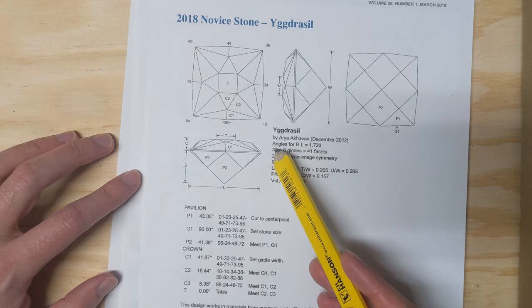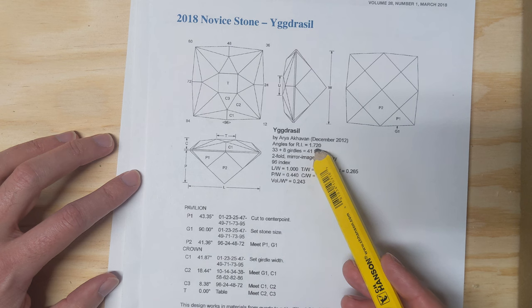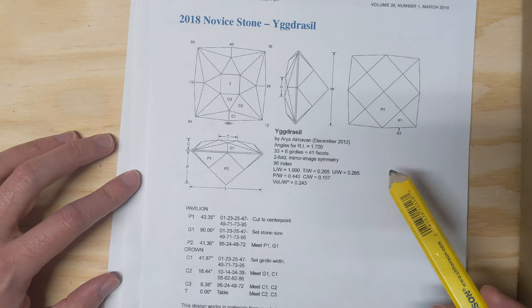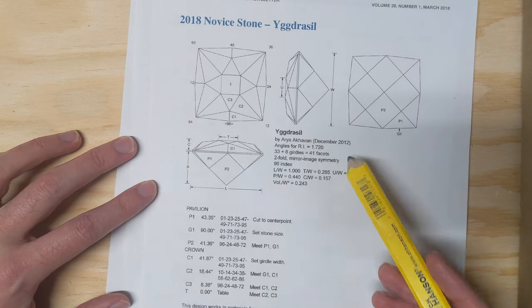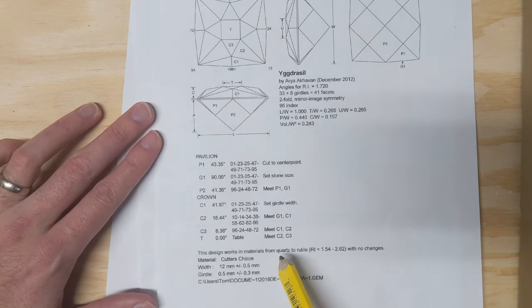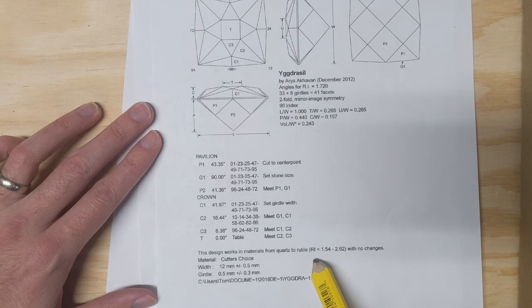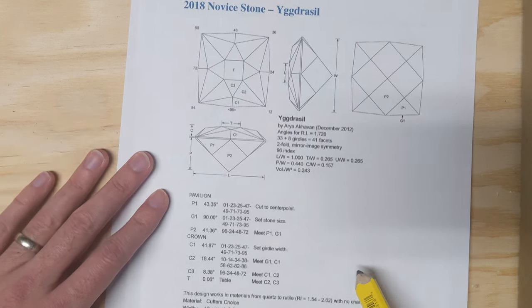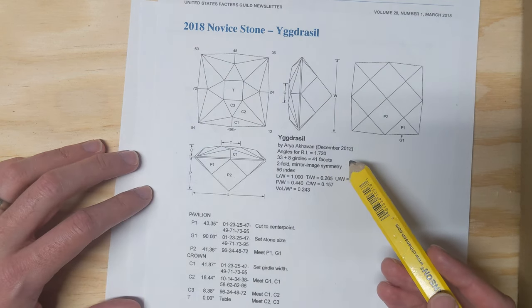This works for angles for RI equals 1.72. RI is refractive index, and that varies by stone. So 1.72 works for, it says down here, from quartz to rutile, RI 1.52 to 2.62, with no changes. Although it says 1.72, it does work for a range in this case.